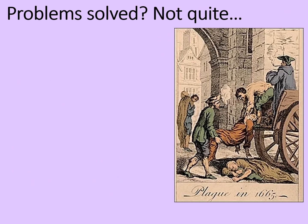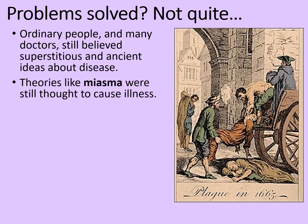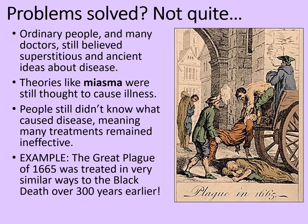With Thomas Sydenham identifying that diseases needed specific cures, and with the Royal Society encouraging further scientific explanations and investigations, the problems must have been solved. Well, not quite. Ordinary people, and many doctors for that matter, still believed superstitious and ancient ideas about medicine and disease. Theories like miasma were still thought to cause illness, and people still didn't know what actually caused disease, meaning that many treatments remained ineffective. Here's an example which we'll look at in a future video: the Great Plague of 1665, which occurred in London during Thomas Sydenham's lifetime, was treated in very similar ways to the Black Death over 300 years earlier. So how much progress was there?